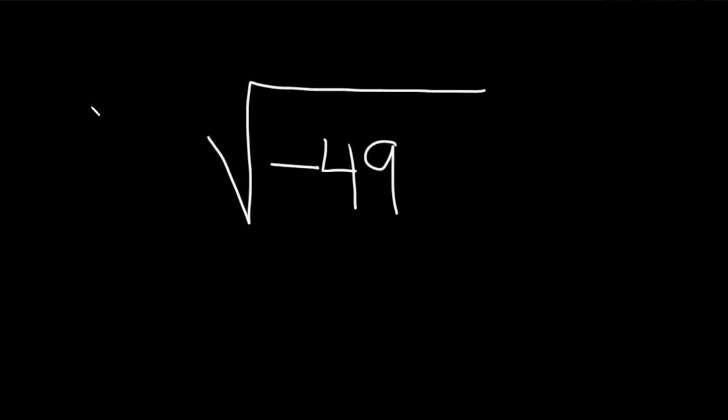Hi, in this problem we're going to simplify the square root of negative 49. So the very first step is to get rid of this negative inside the square root.